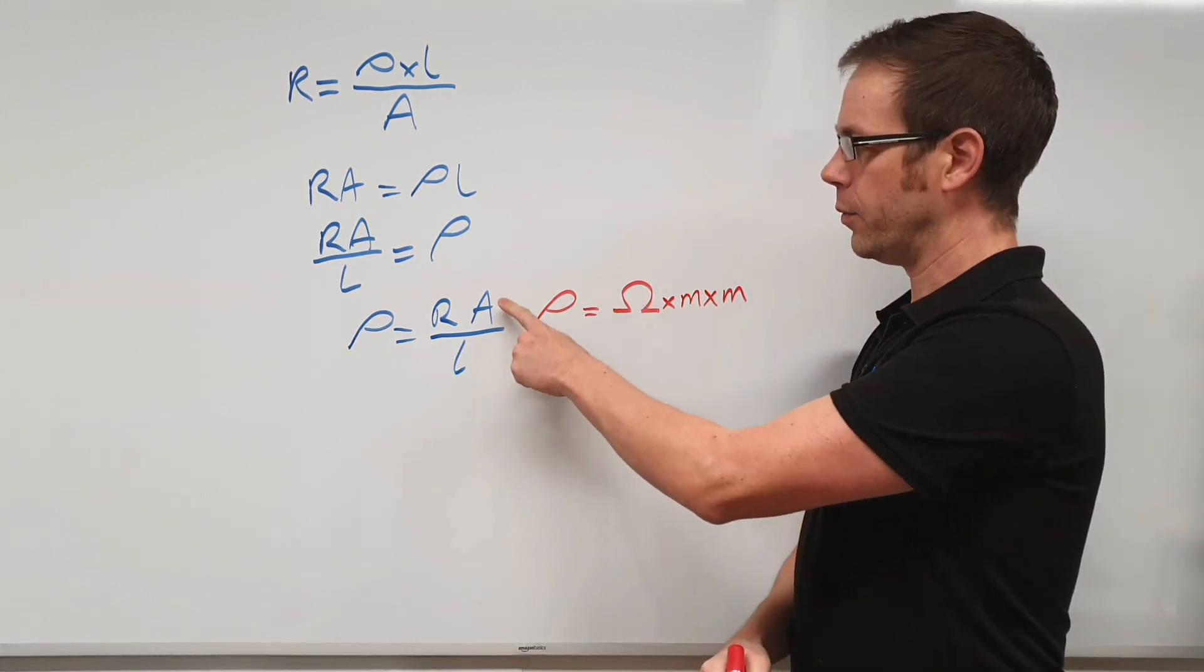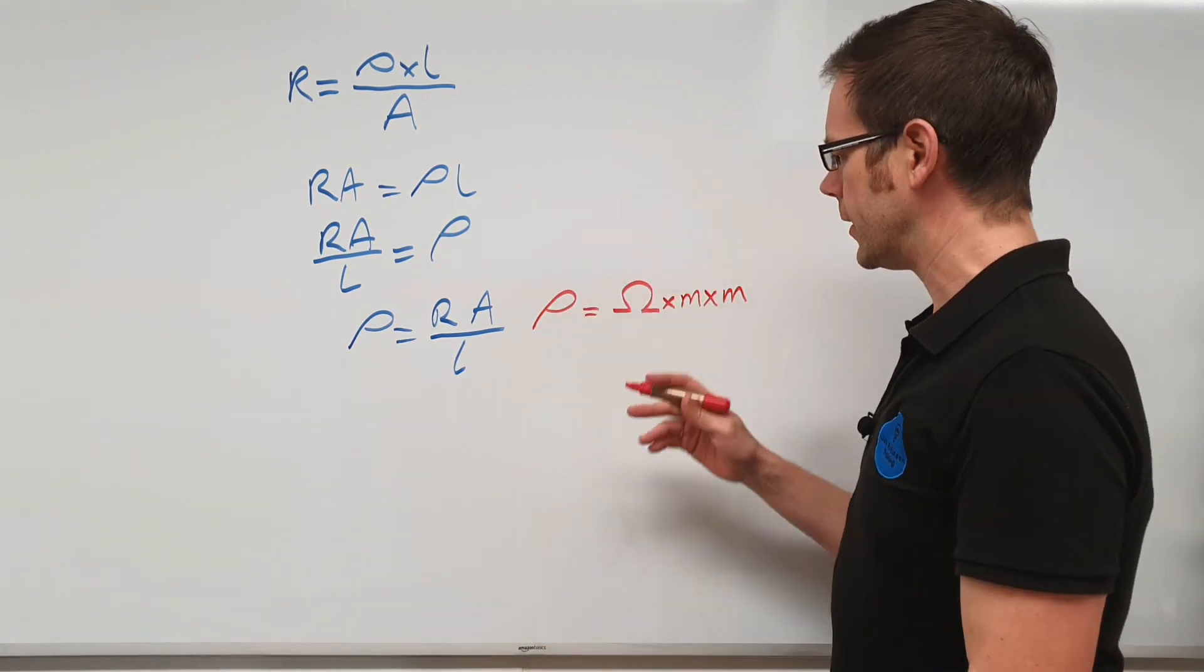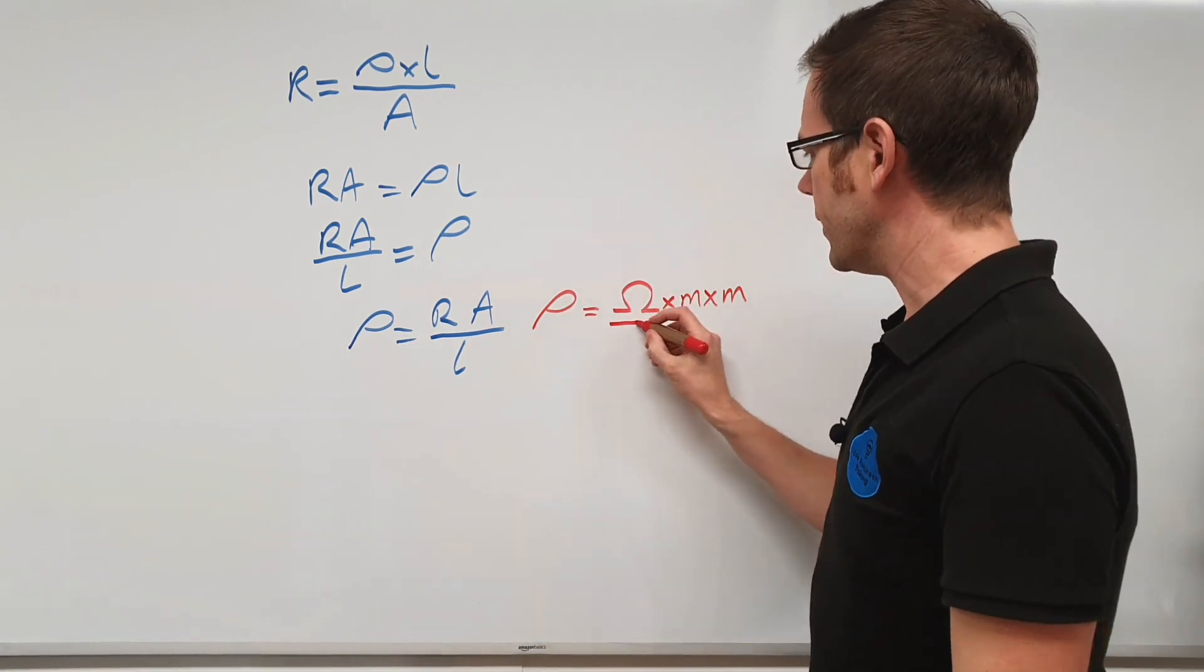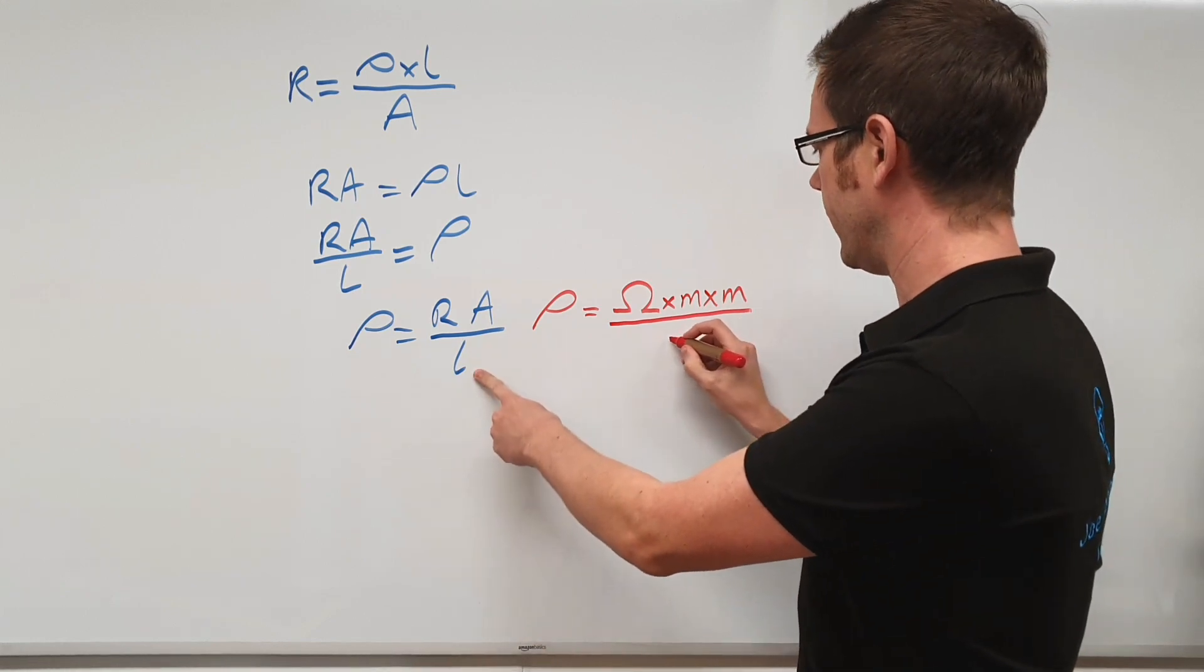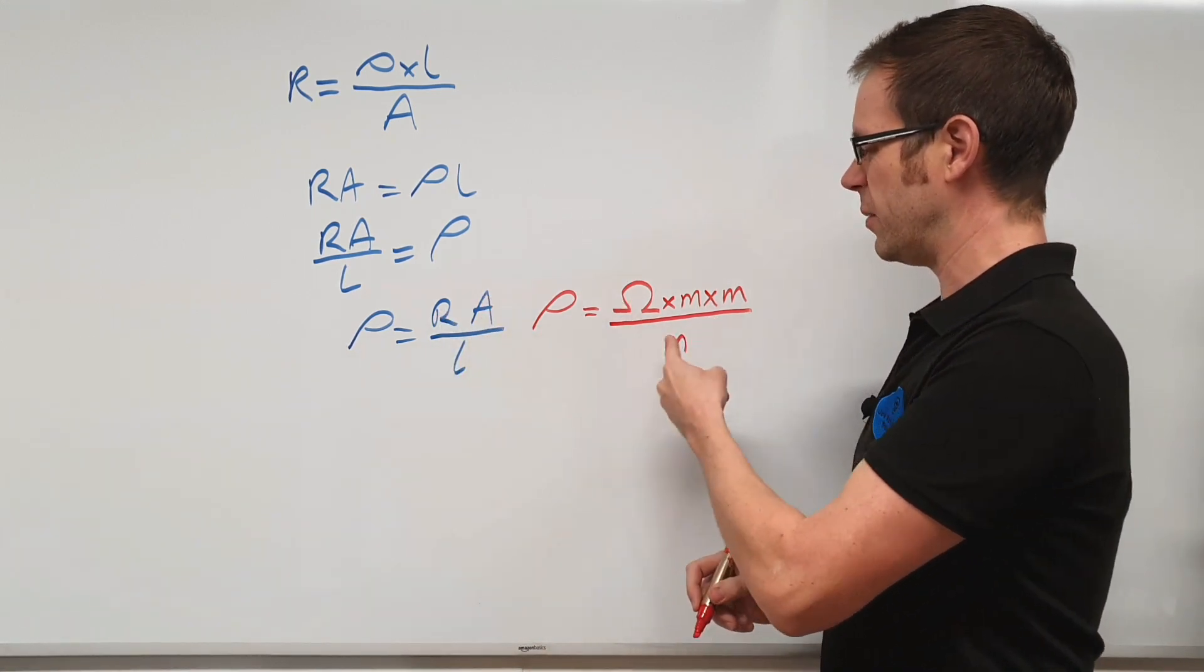which is meters squared, which is the area of a rectangular surface. And then we're going to divide that by the length again in meters.